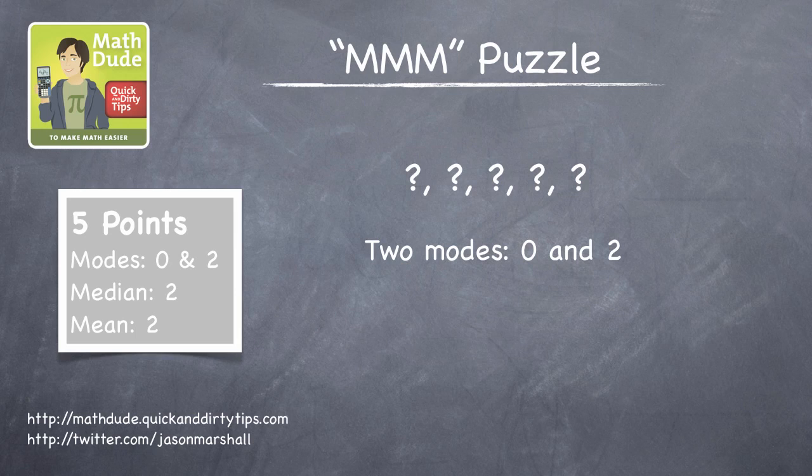In order to be a mode, there must be two or more of that number. So in this case, the set of five numbers has to have two each of 0 and 2. There can't be three of either, because then that number with three would be the only mode. So we already know four of the five numbers in our set: 0, 0, 2, 2.